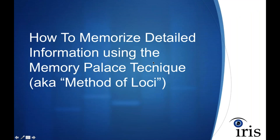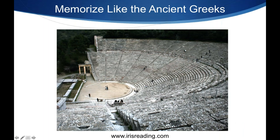That's the numeric peg system. Now some of you might be wondering: what if the information is very detailed? What if I have to remember not just those 12 things, but seven or eight details about each one? There's a great technique used by the ancient Greeks called the memory palace technique, also known as the method of loci. It's a few thousand years old. I wish I'd learned it earlier in high school or college — it would have helped me a ton.